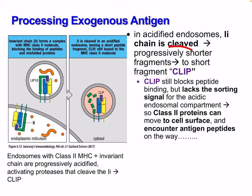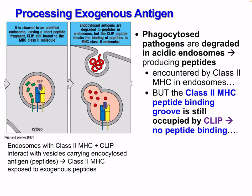In the acidified endosomes, the invariant chain is cleaved progressively, leaving shorter and shorter fragments until we get a short fragment called CLIP. We can see it being slowly broken down until we have that short fragment CLIP. CLIP still blocks peptide binding but lacks a sorting signal for the acidic endosomal compartment, so the class 2 proteins can move to the cell surface and encounter antigen peptides. Endosomes with class 2 MHC and invariant chains are progressively acidified, activating the protease that cleaves the invariant chain into CLIP.